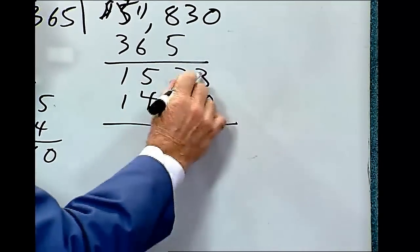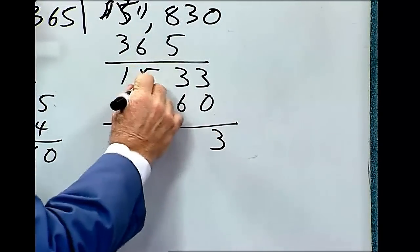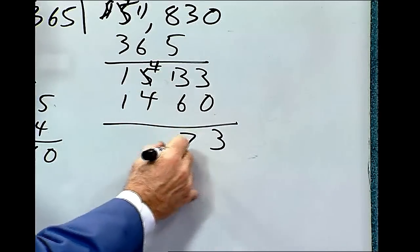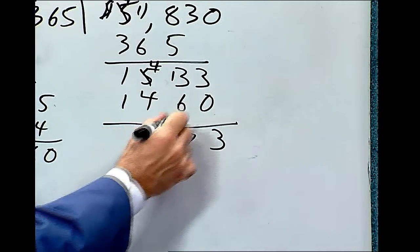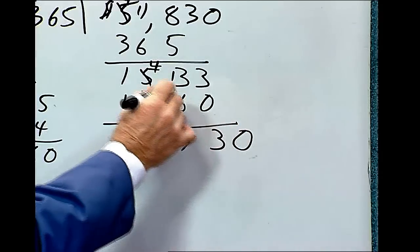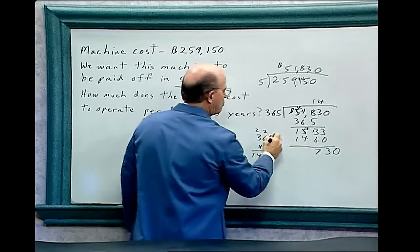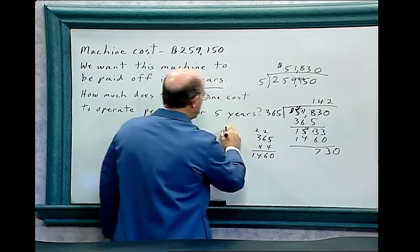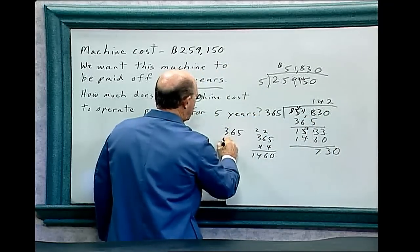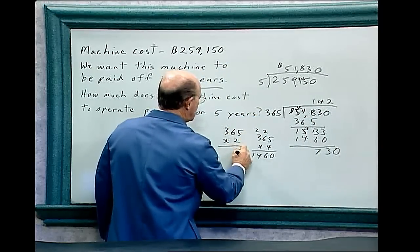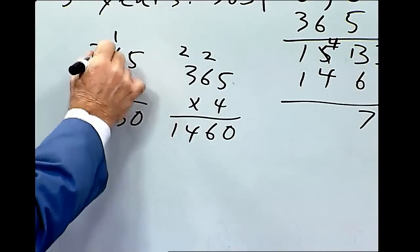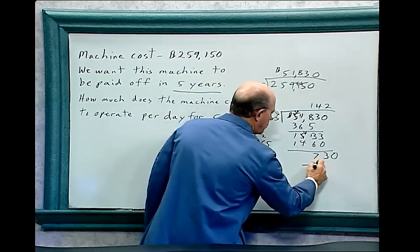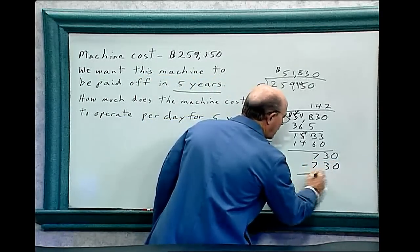That would be 3, that would be 7, lower the 0, and this would be 4 times here. 365 times 2: 10, 13. We deduct 730, and that leaves 0.